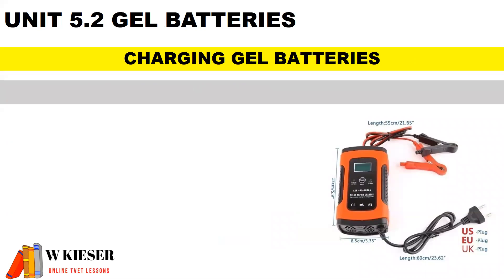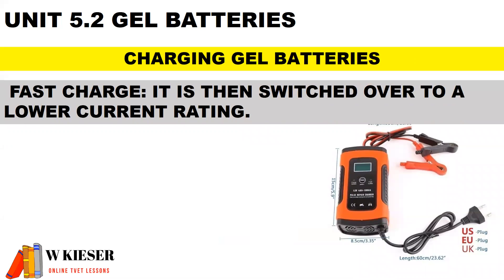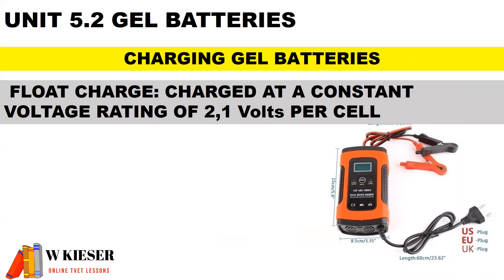When charging gel batteries, there are two types of charging: fast charge and float charge. For fast charge, a constant voltage is achieved with a regulated voltage output, which is then switched over to a lower current rating. For float charge, it is charged at a constant voltage rating of 2.1 volts per cell until the battery is fully charged.